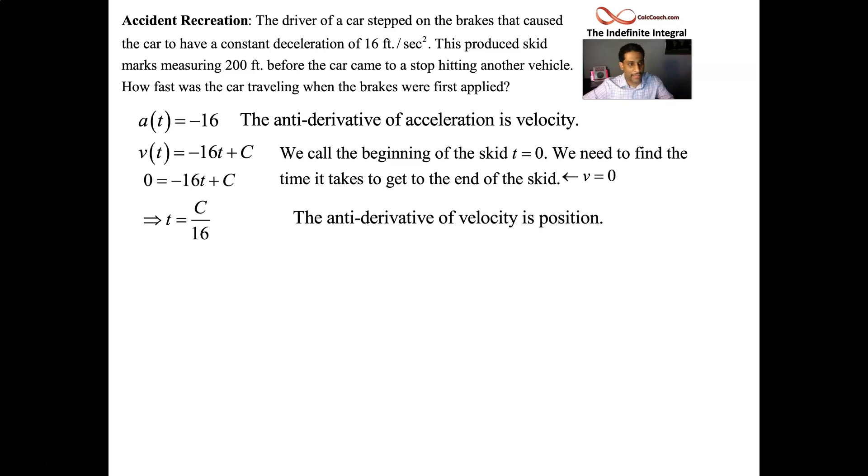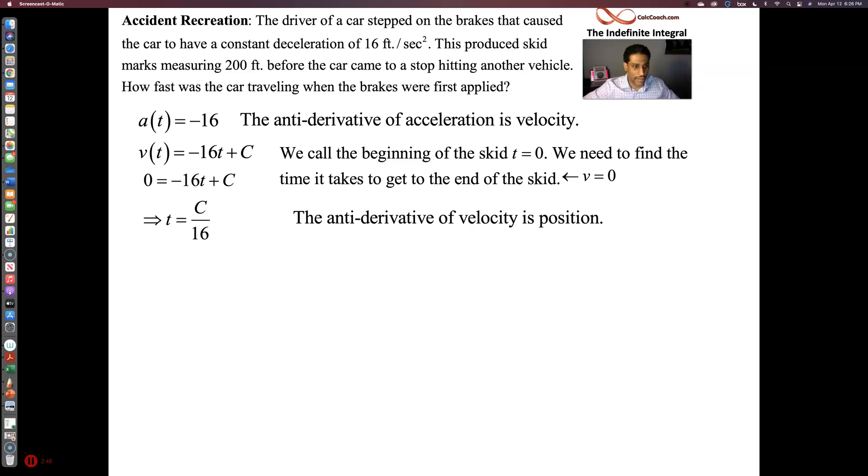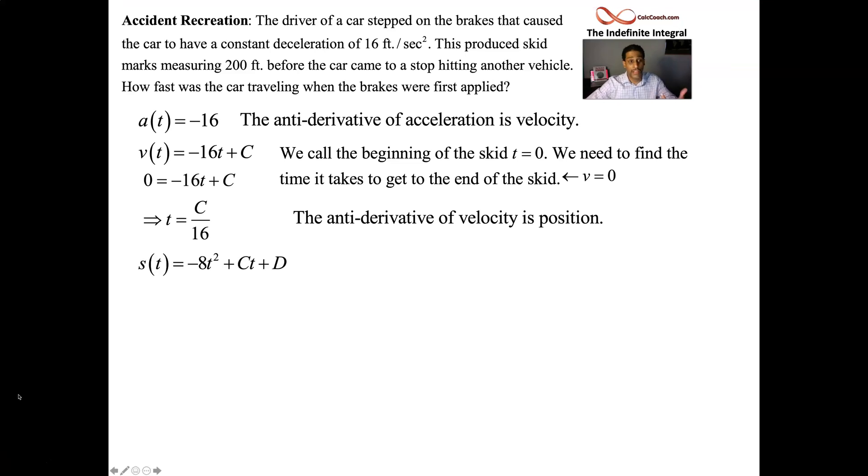So now we do this process again. We're back to what the velocity is. Oh, I didn't write it out. Sorry about that. Take that velocity and in place of, oh, there it is. The velocity v(t), negative 16t plus C. And I need the antiderivative of that. Okay. Oops. Sorry. And so we, t squared over two, put the C, give it a t, and then we need another variable. So we have D.